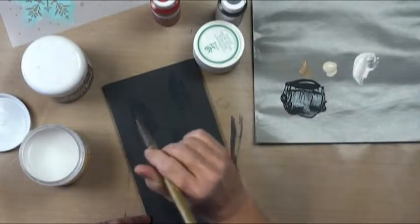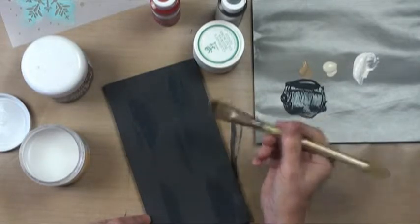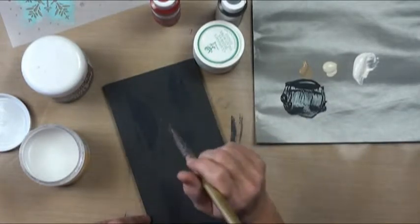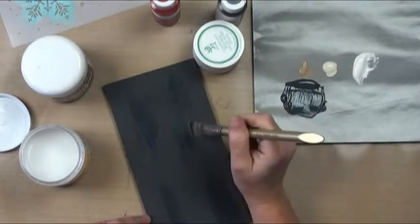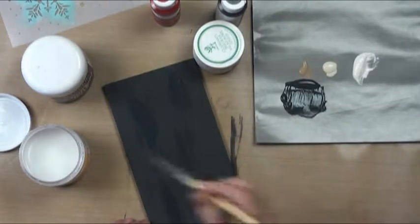When you apply heavy paint on top of the crackle medium, that tells the crackle medium cracks it heavy. If you apply thin paint on top of the crackle medium, the crackle tells the paint to crack thin. So it's how thick you put the paint.